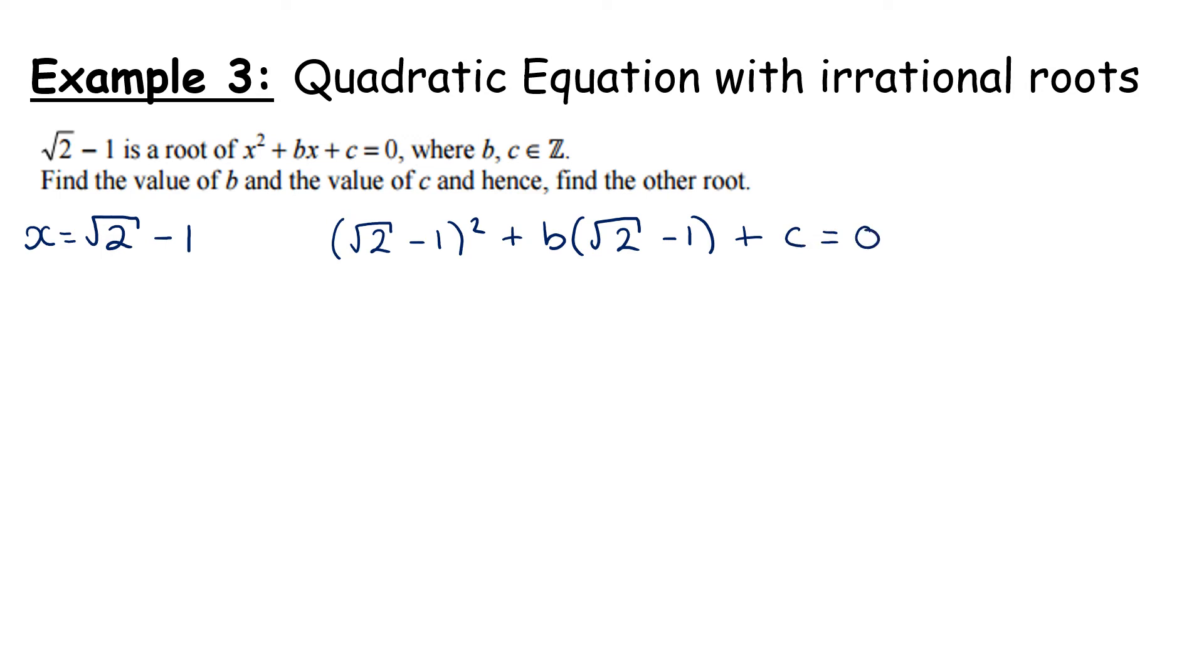So I'm going to work this like I would in algebra. You can work it with your calculator, that's absolutely fine. But I'm going to use it like we would usually square a binomial. So square the first, I get 2, twice the first by the second, so I end up with -2√2, and then square the last, so I get +1, + b√2. You can write √2b either. - b + c = 0.